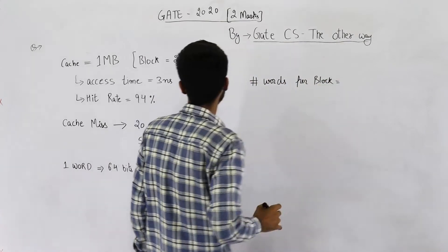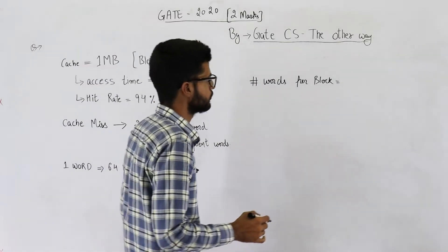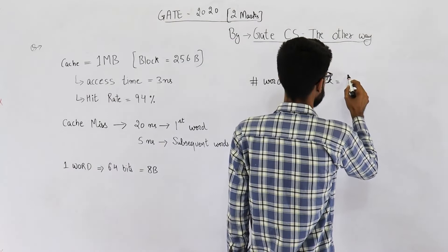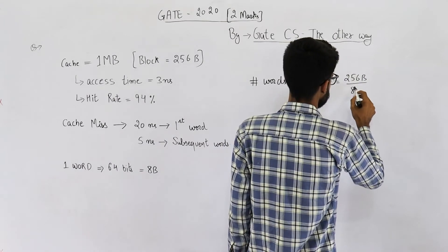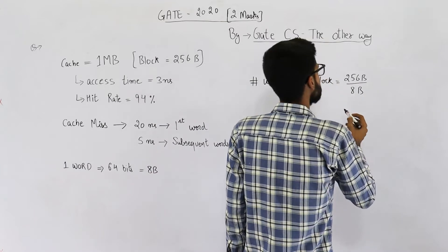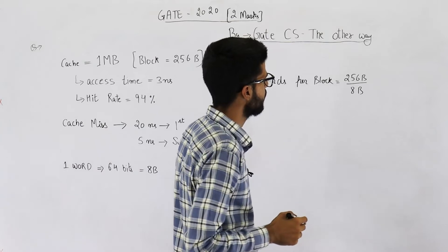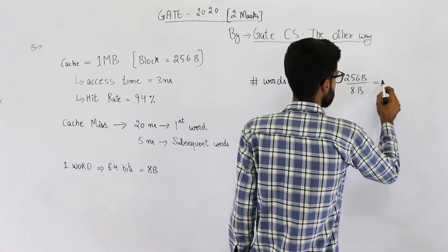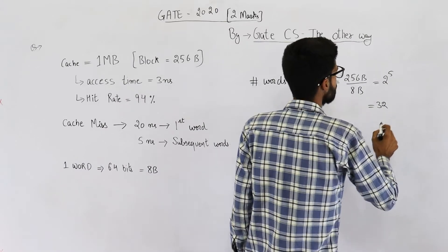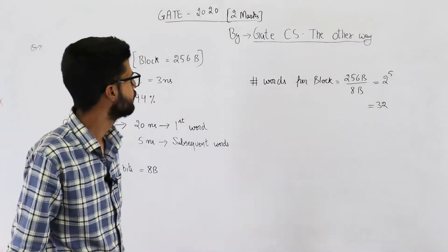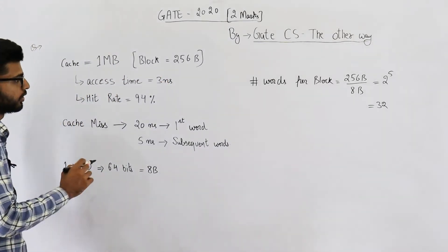How many words are there in one block? Number of words is going to be 256 divided by 8, which is 2^8 divided by 2^3, which is 2^5. So this comes out to be 32. That means every block has 32 words.